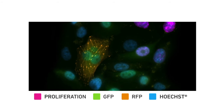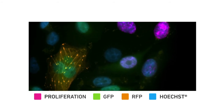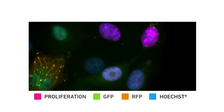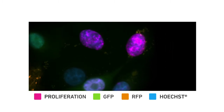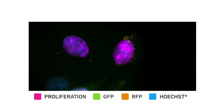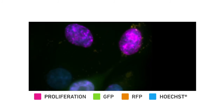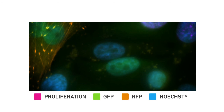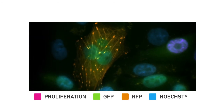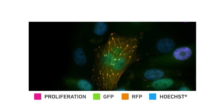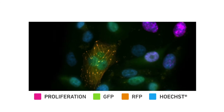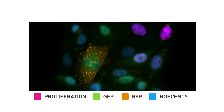In this example, melanoma A375 cells constitutively expressing green fluorescent protein, or GFP, were treated with the Click-IT Plus EdU AlexaFluor 647 imaging kit. Newly synthesized DNA appears pink. The constitutively expressed GFP is displayed as green. Nuclei are blue due to HERC staining. Talin is stained with an RFP fusion protein. Because the cell morphology is maintained, four fluorescent signals from one population of cells can be detected.